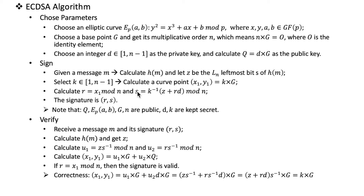We also calculate another value S as the inverse of K times (Z plus R times D), modulo n. Here K⁻¹ is the modular inverse of K modulo n. To calculate this we need the extended Euclidean algorithm, which we discussed in the RSA algorithm video with a simple example. Now we have the signature for message M, which is the pair (R, S).